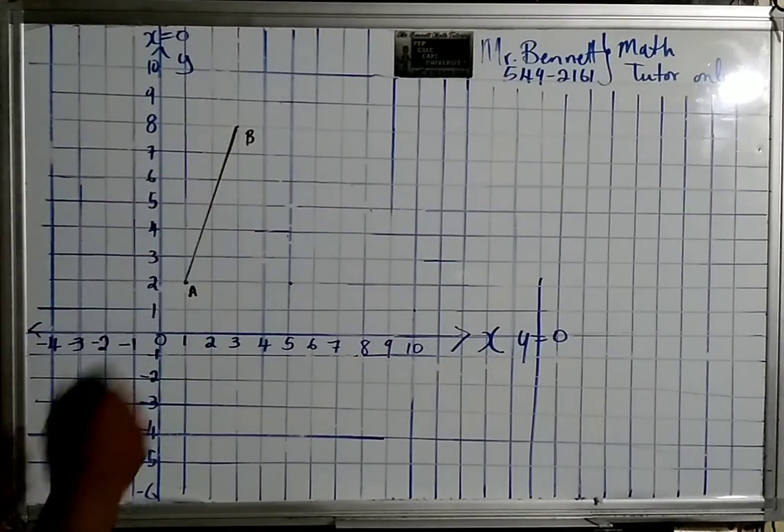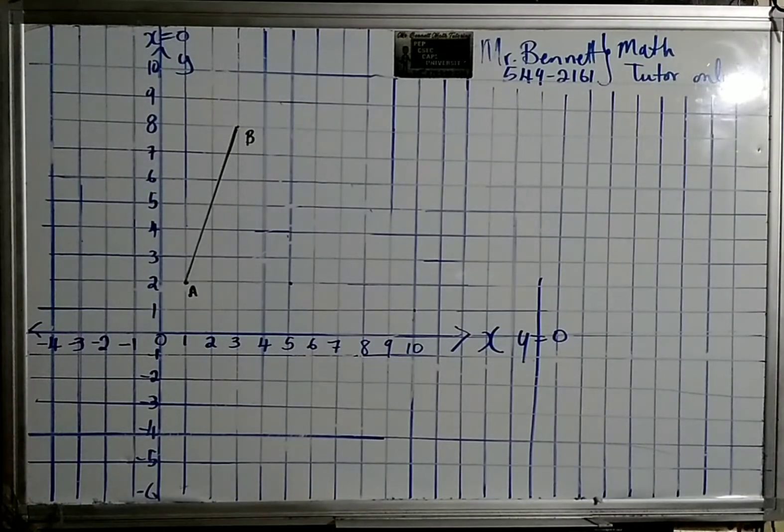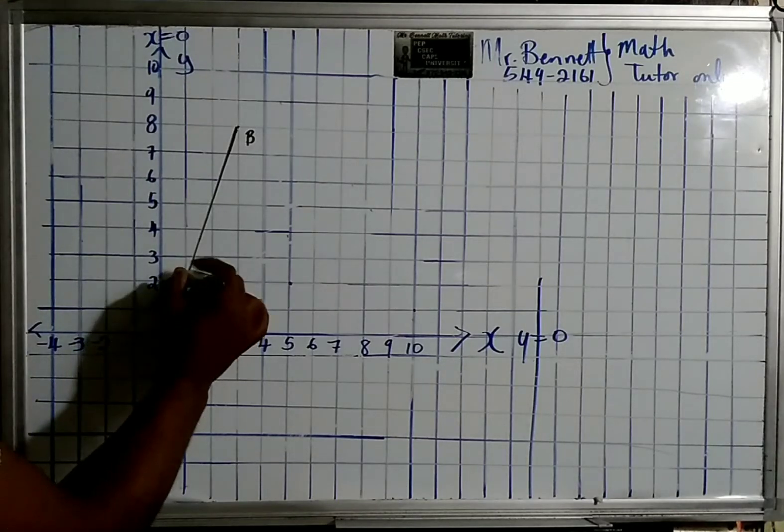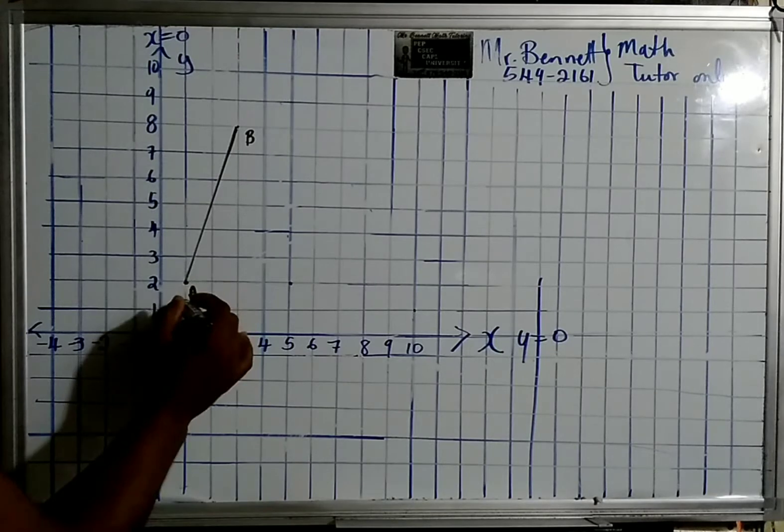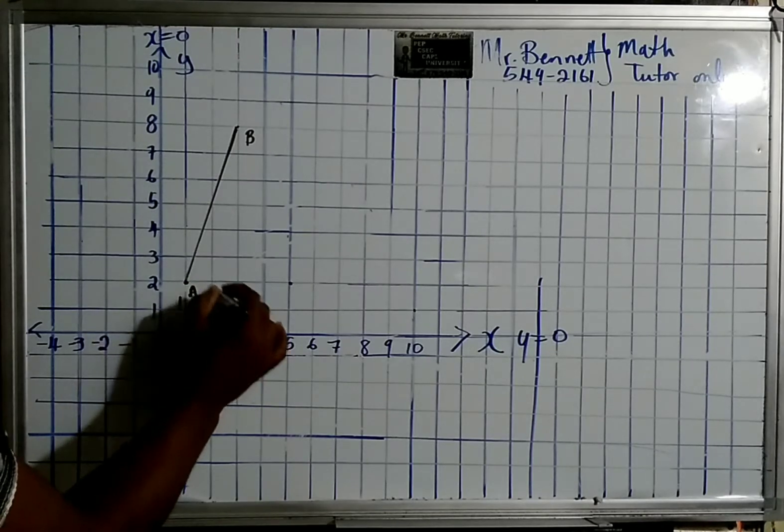We are given this line and we are asked to find the gradient. When we're finding the gradient of a line, all we have to do is take any two points on the line. We're going to use the endpoints—it's much more convenient. So A is at point (1,2) and B is at (3,8).